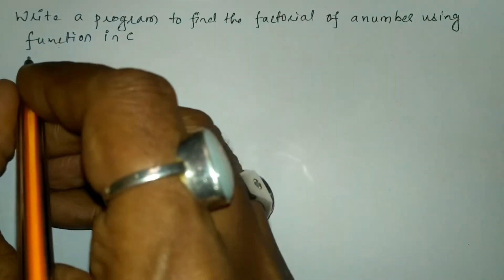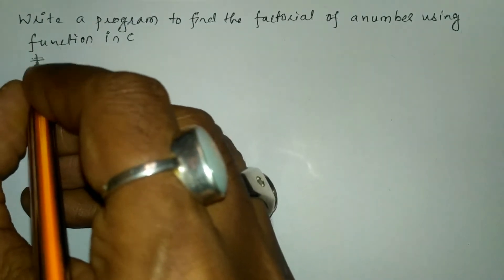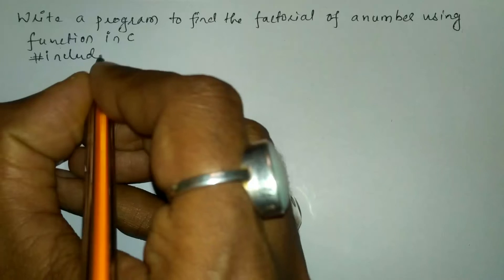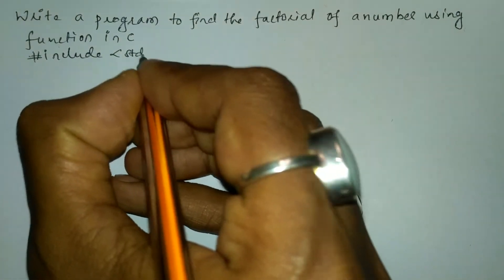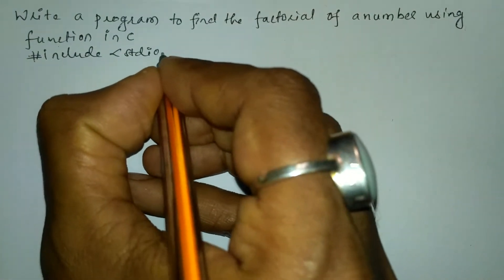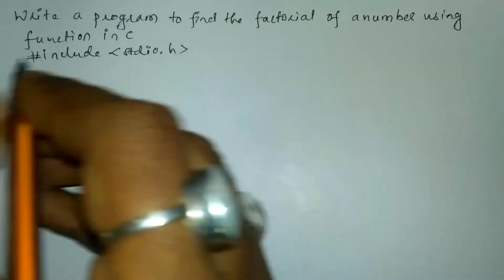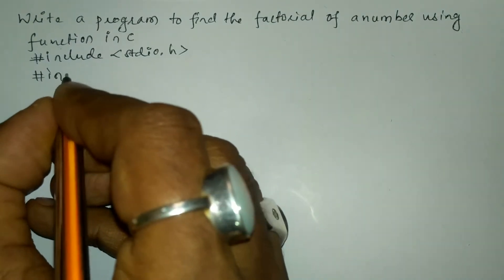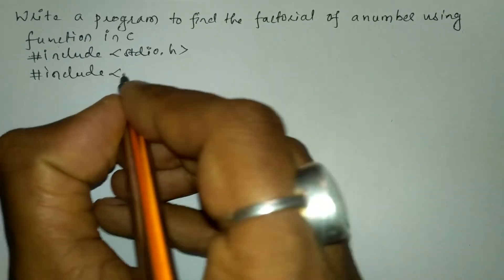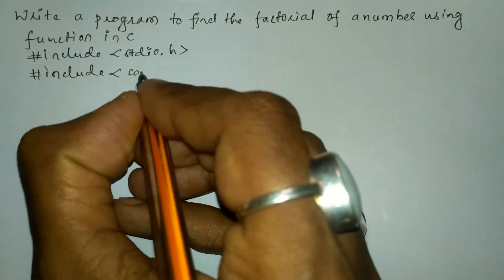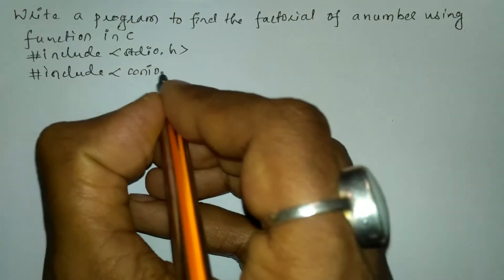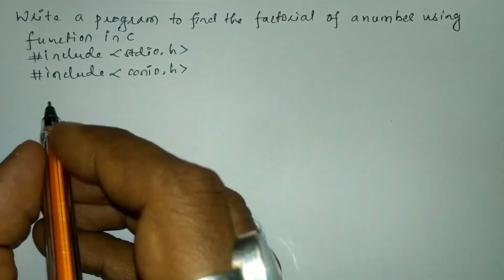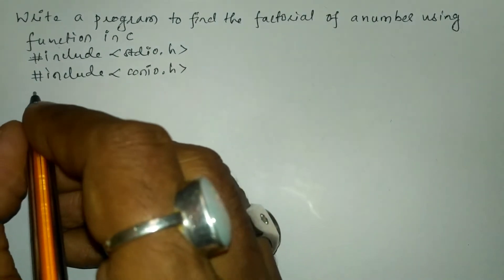Let us write the preprocessor directives. Hash include in angular brace we will write standard input output dot h header file. The next preprocessor directive is hash include in angular brace and we will write console input output dot h header file.